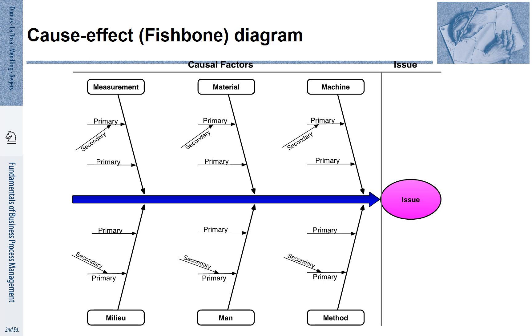And we start with six categories of potential causal factors. All these categories start with M. We also call these the six M factors.